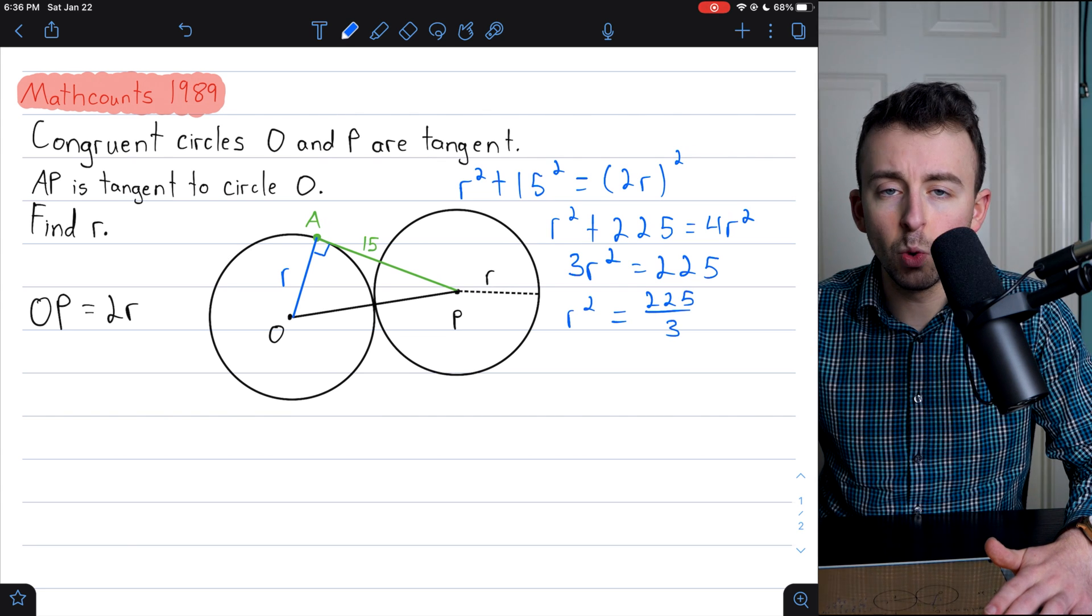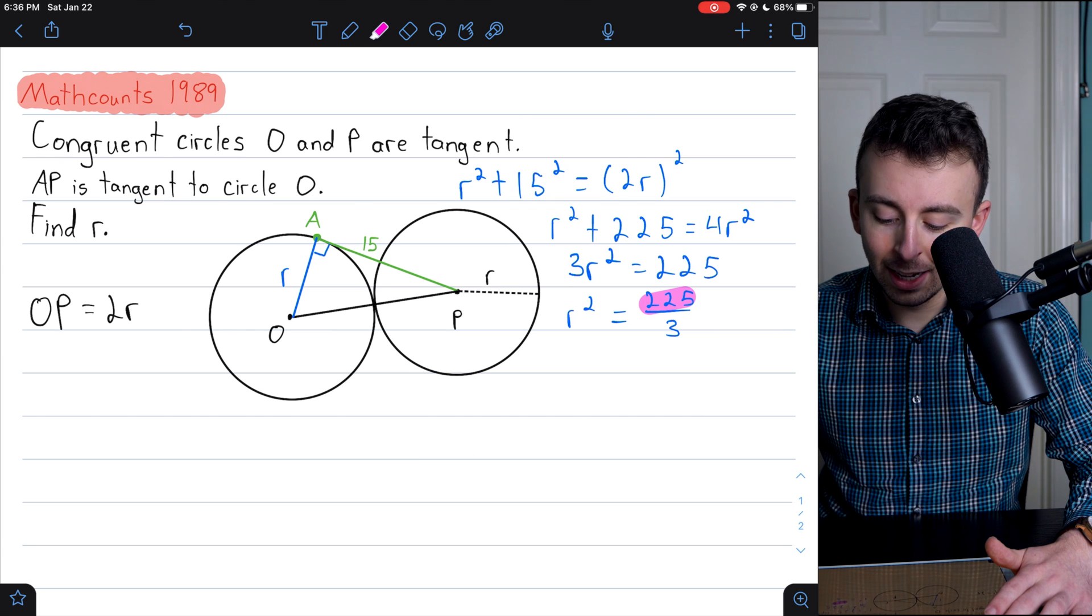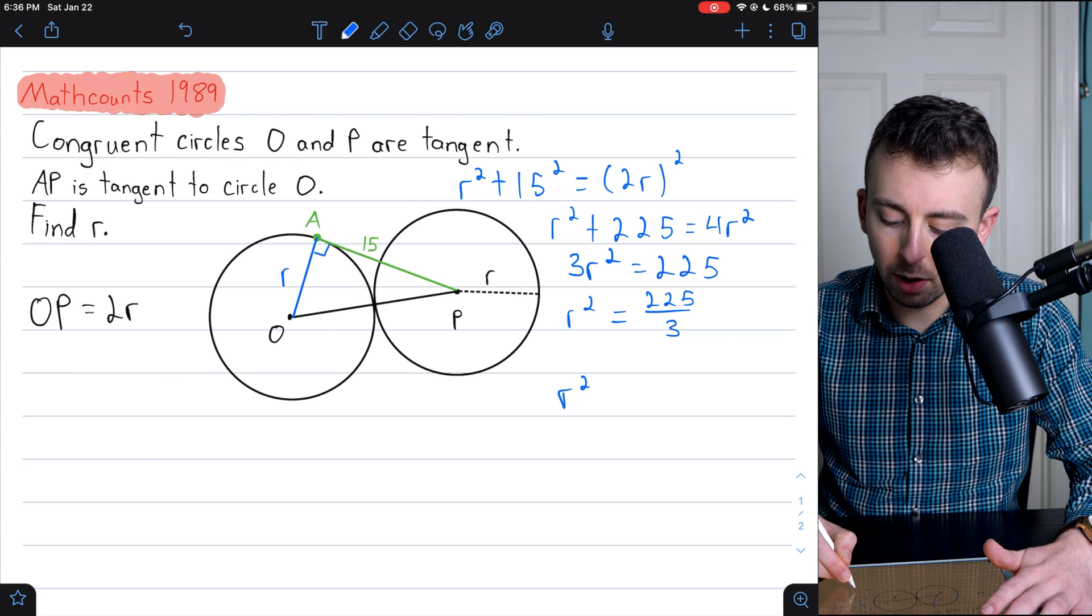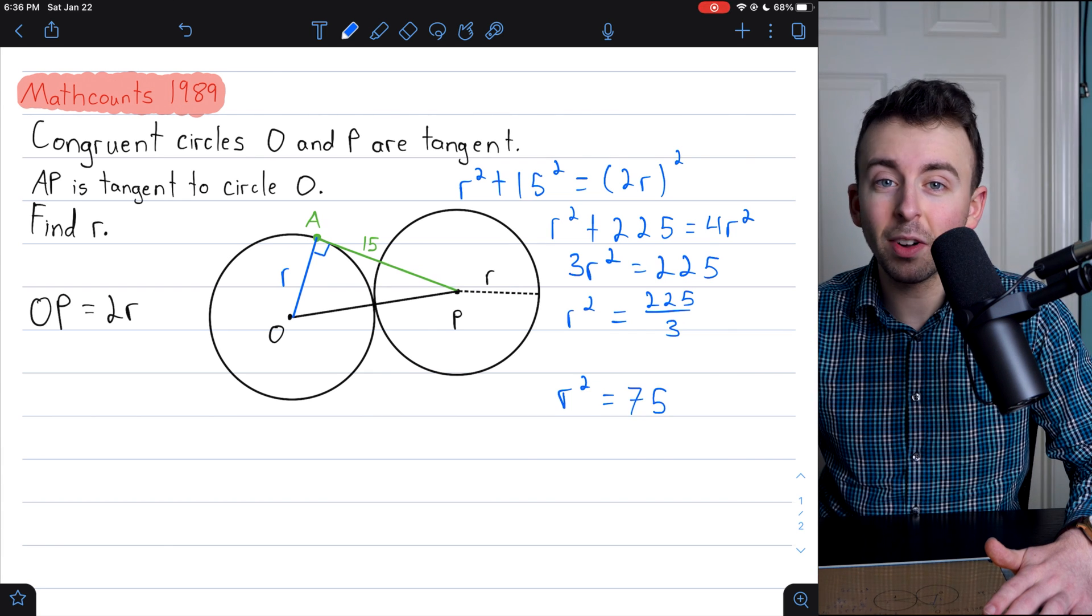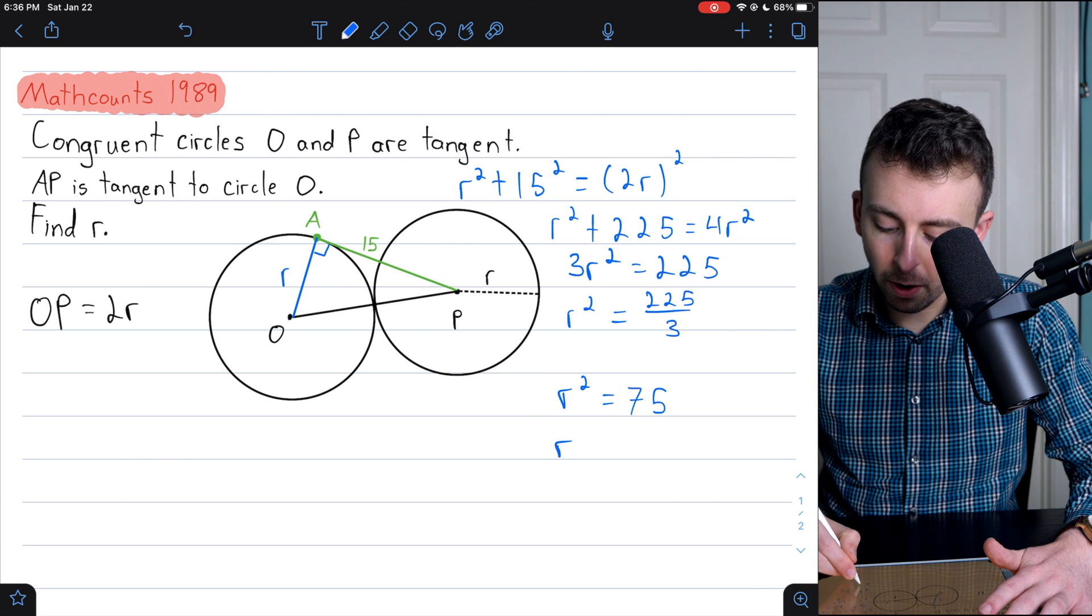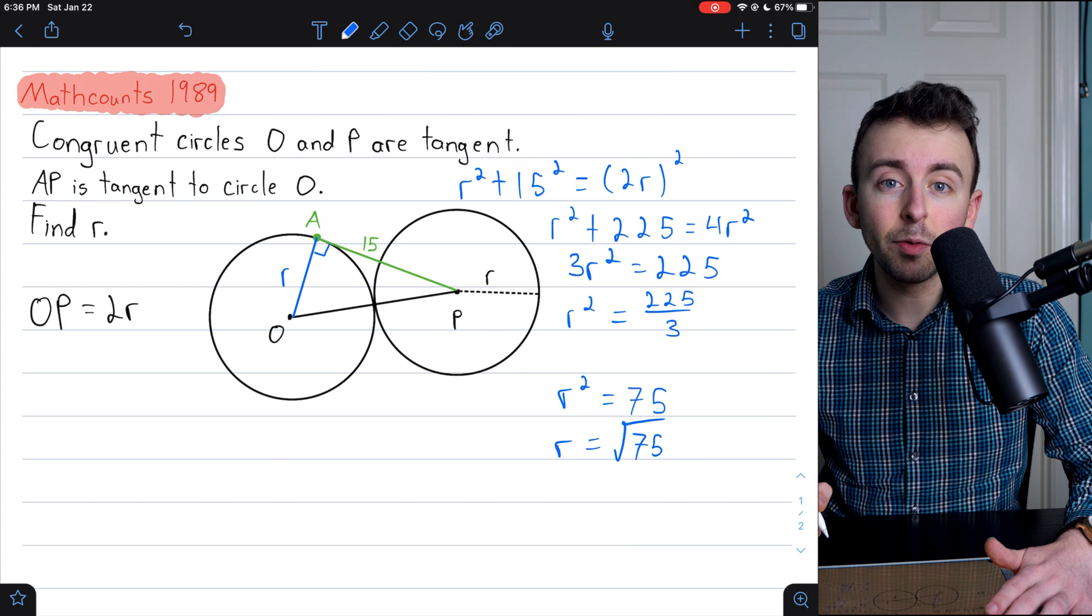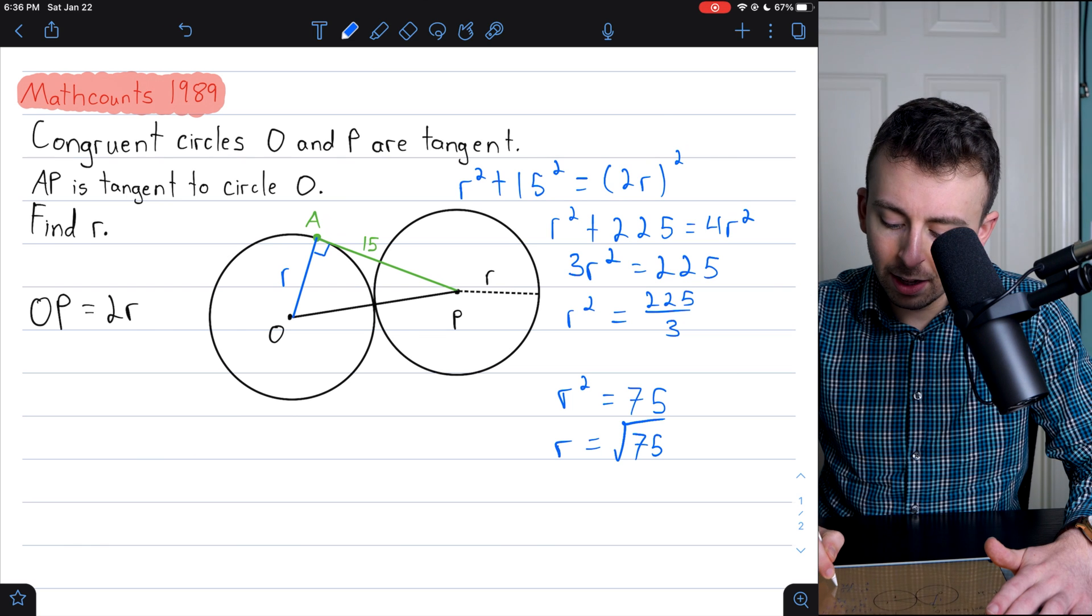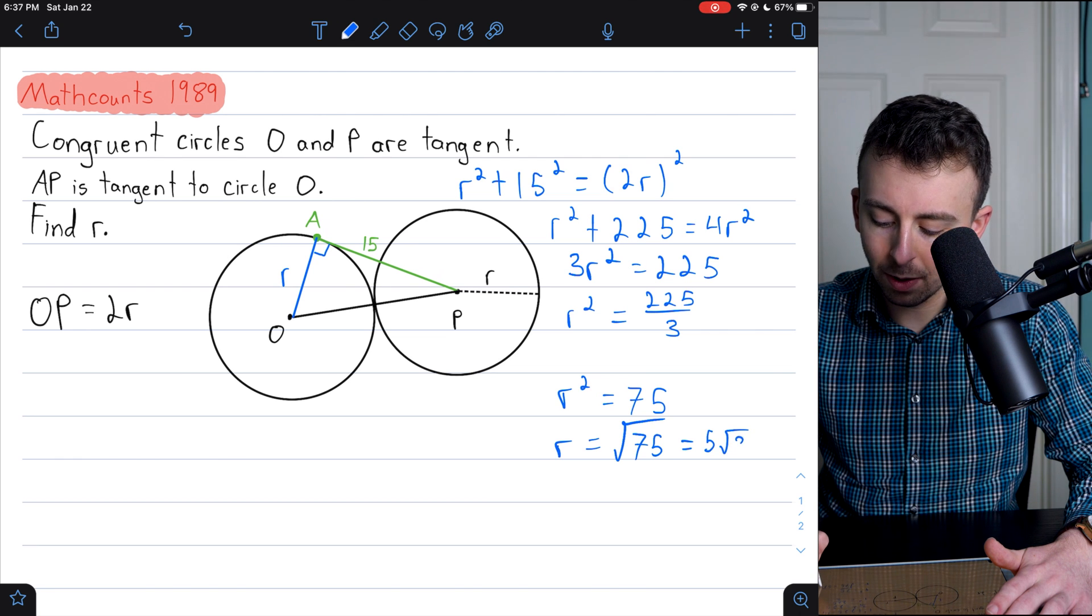So we have R squared equals 225 divided by 3. Let's add up the digits of 225 to see if it's a multiple of 3. 2 plus 2 is 4 plus 5 is 9. So 225 is indeed a multiple of 3. It turns out 225 divided by 3 equals 75, I believe. So R squared is 75. So what's R? Well, we just got to take the square root of both sides. So R is equal to the square root of 75. We can simplify that a little bit because 75 equals 3 times 25. And 25 is a perfect square. So if we take that square of 25 out of the square root, we'll have 5 root 3.